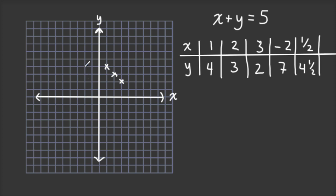1, 2, 3, 4, 5, 6, 7. And 1 half and 4 and 1 half, right there in the middle. What you start to see is that all of these points are on the same line.